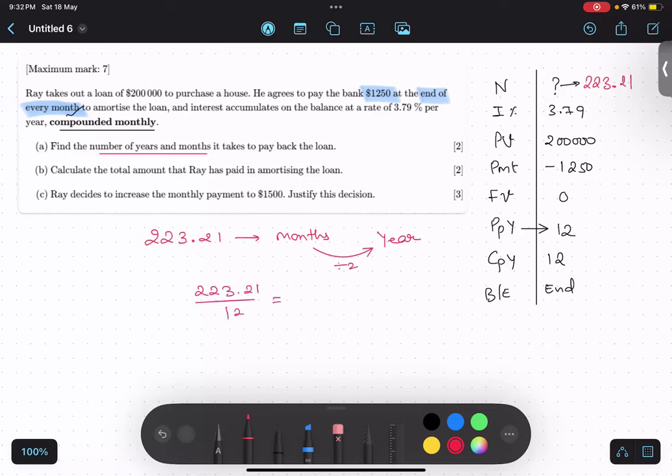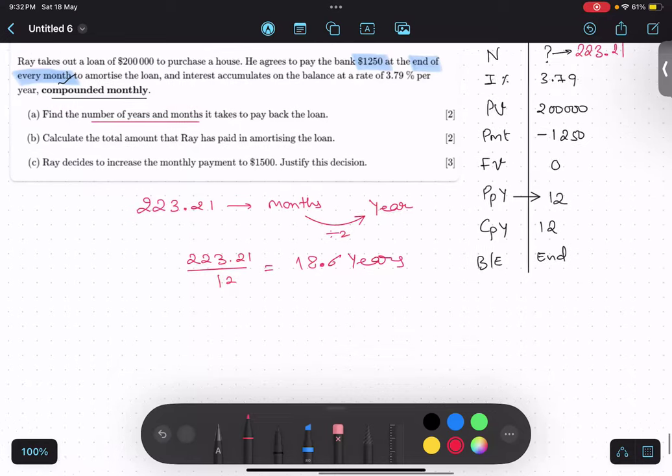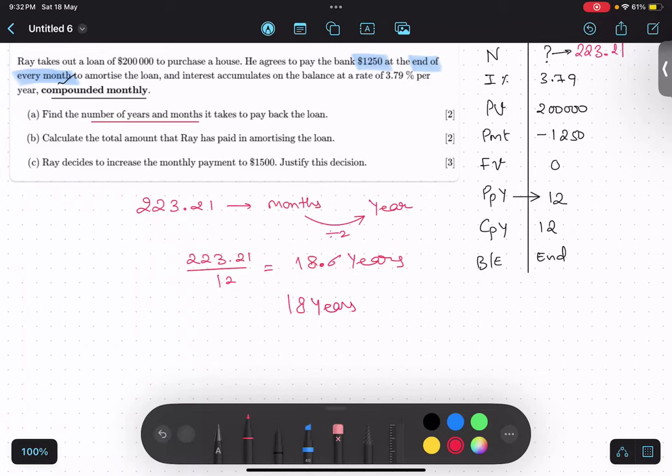So, it's 18.5 years. Divided by 12, you will get 18.6 years. We do not say 18.6 in real life. So, we have to convert this thing. 18.6 years means 18 years and 0.6 years.